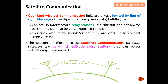Overland wireless communication links are always limited by line of sight, which can be blocked by mountains or buildings. As shown in this diagram, it is always ideal to have line of sight between transmitter and receiver to guarantee signal transmission. However, over land this is almost not possible because mountains and buildings block the line of sight, making overland communication a big challenge.